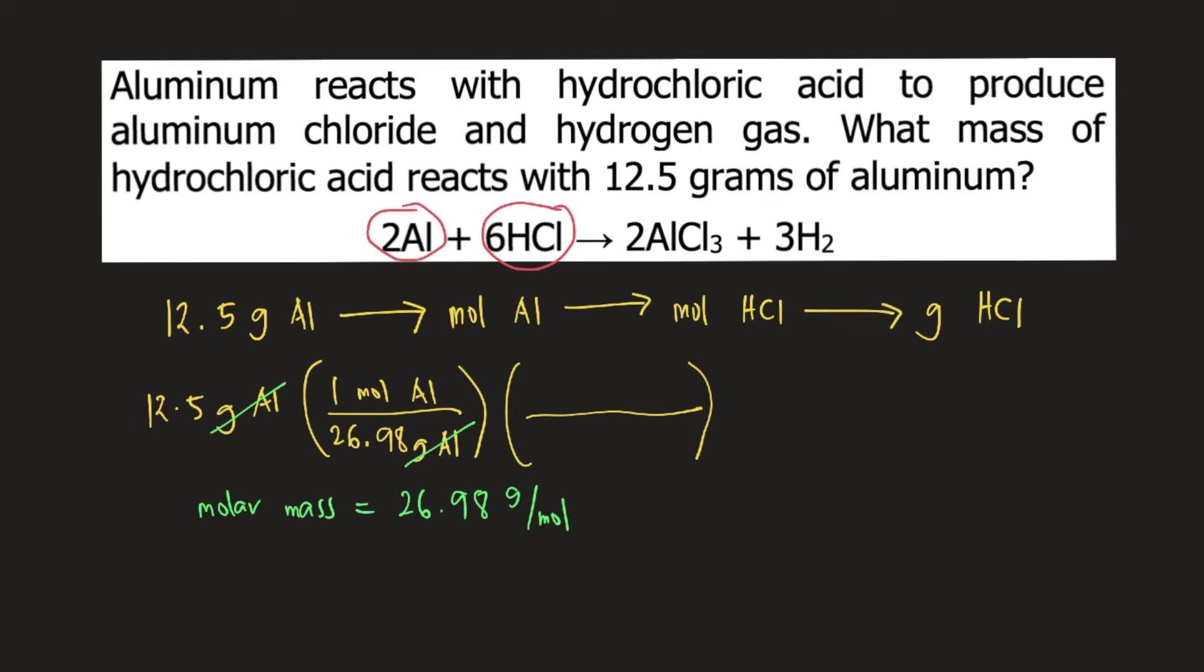We plug that into our equation: 2 moles of aluminum at the bottom require 6 moles of HCl on top. Moles of aluminum would cancel, so we have moles of HCl.